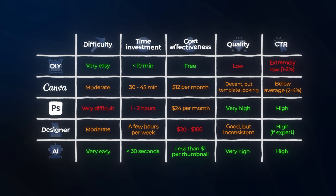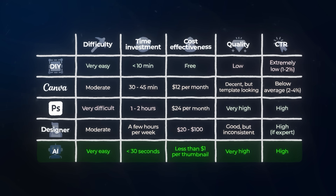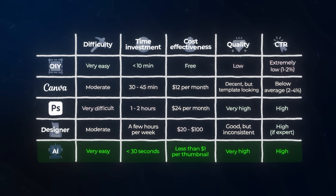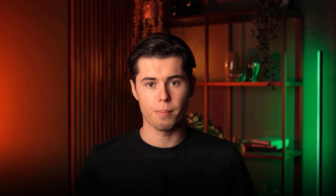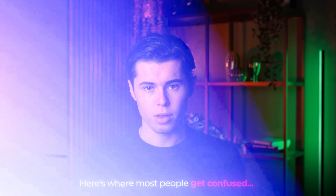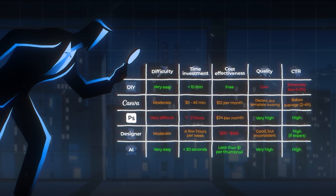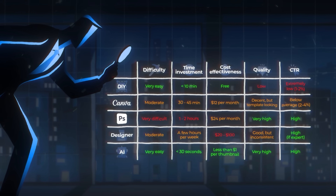If you care about creating thumbnails quickly, easily, and with the highest possible CTR, there's really only one logical choice here. But here's where most people get confused — they look at this report card and think, this seems too good to be true. How can something be both the easiest and get the best results?